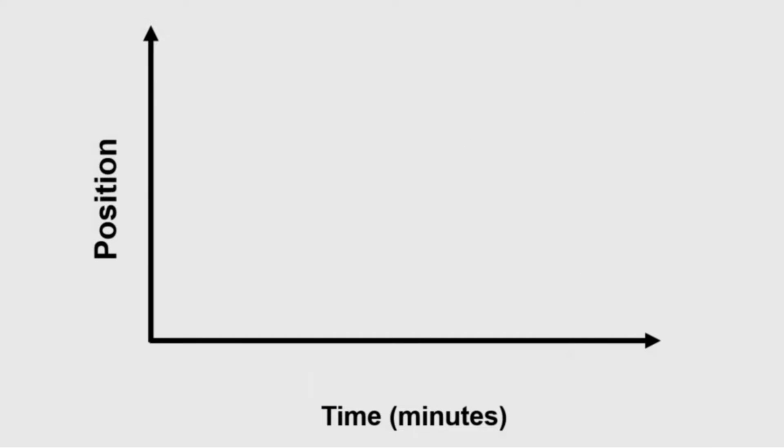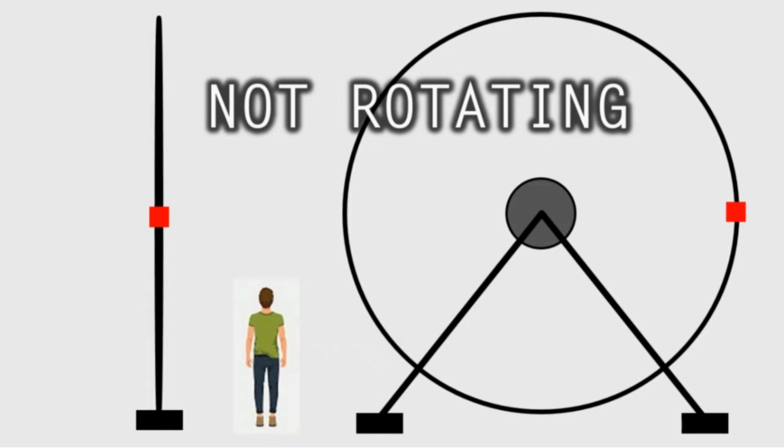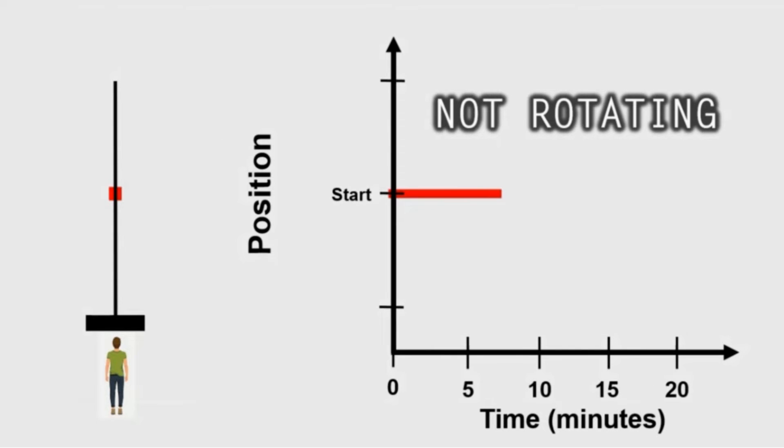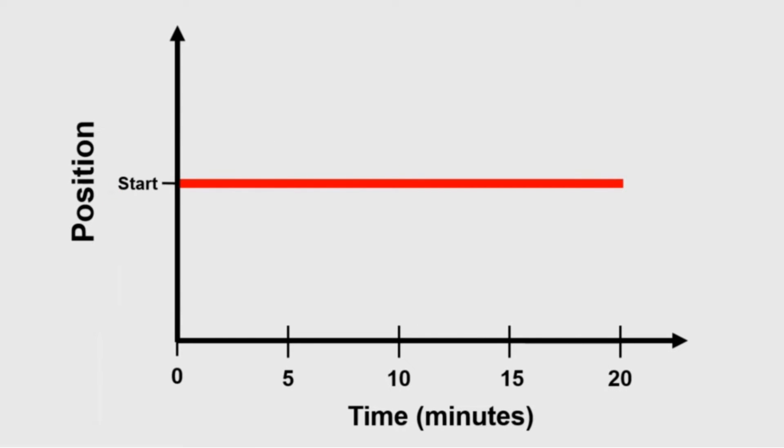On a position versus time graph, with the minutes marked, first, if the giant wheel is not rotating, no matter how much time passes, the red square will stay at the same position. Notice, as time passes, position stays the same. So all you get is a horizontal line, showing no movement.